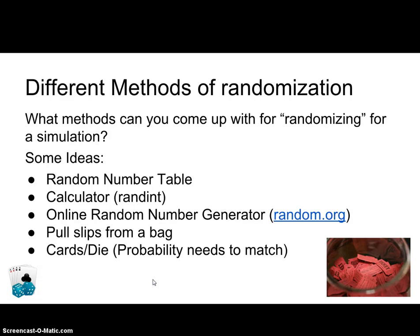The second way you could do it is with a calculator. The TI-Nspire or the TI-84 — any TI calculator — uses a function called randint. That means: give me a random integer. Use randint and it'll give you a random integer from whatever value you want. But again, it's pseudo-random, because there's code in your calculator.